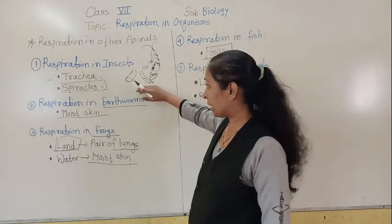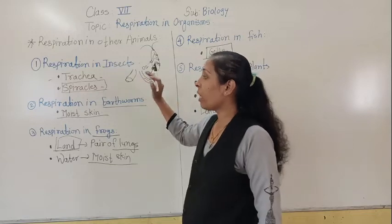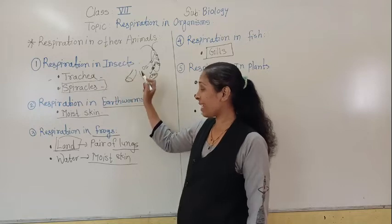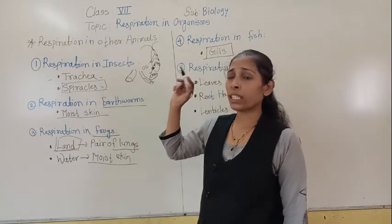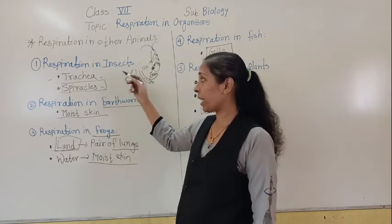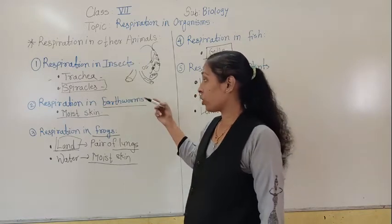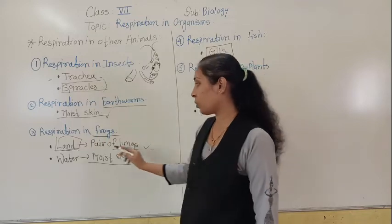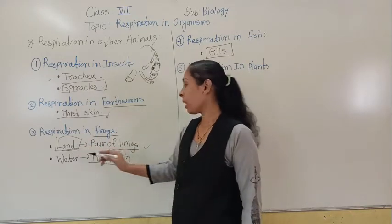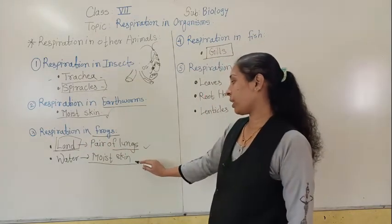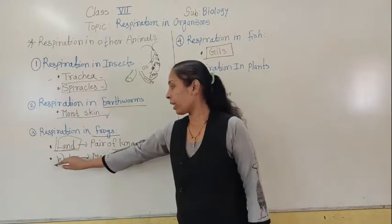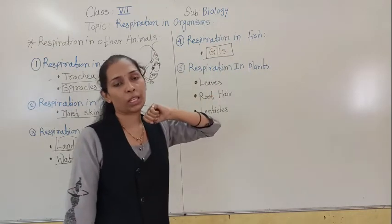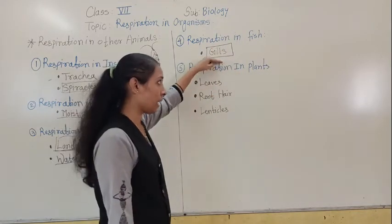So we have seen the different organisms and their respiratory organs. Insects do respiration with the help of trachea and spiracles. Earthworms do respiration with their moist skin. Frogs have a pair of lungs used when on land, and also use moist skin when in water. Fish do respiration with the help of their gills.